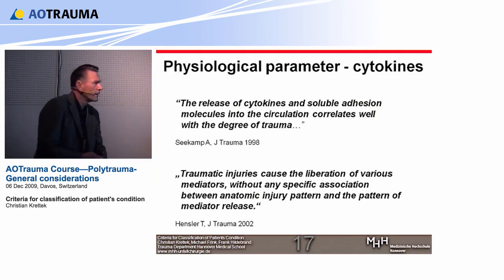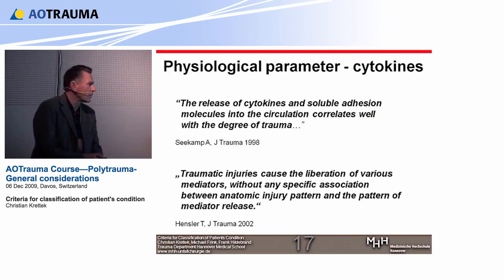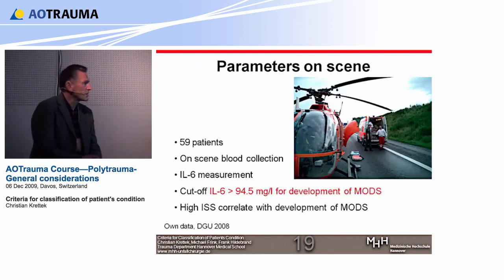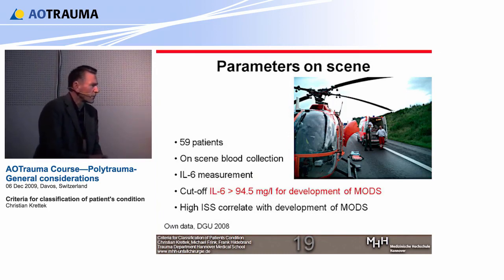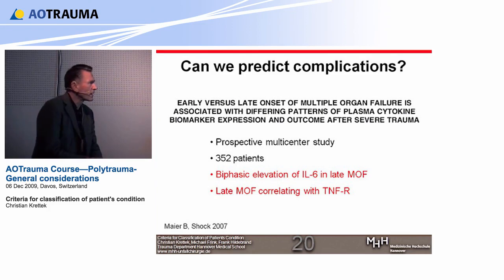Cytokines represent a new big hope — that we obtain a blood sample and get parameters which predict and help compare severities of trauma. A promising study from Gephardt in Ulm on almost 100 patients with on-scene blood collection showed an early increase of IL-6 immediately following trauma that correlates nicely with ISS after hospital admission. Own data from the scene show a cutoff of about 100 mg per litre for the development of multi-organ dysfunction, and high ISS values correlate with the development of this entity.